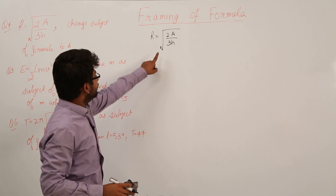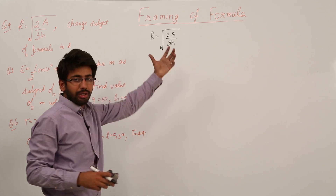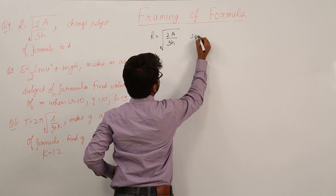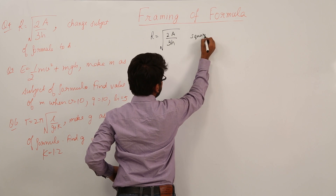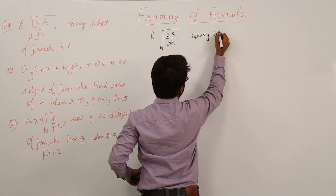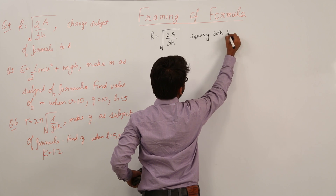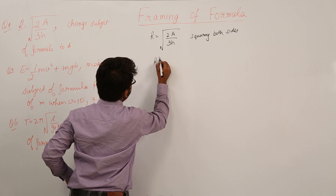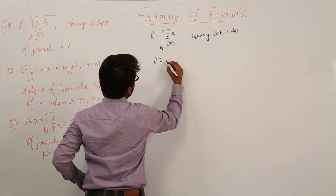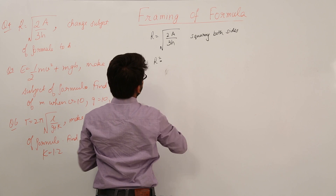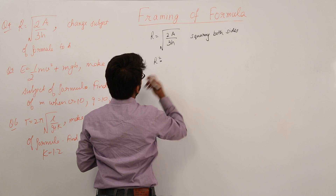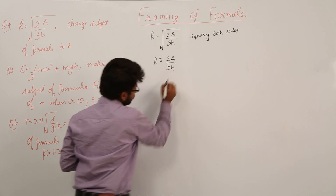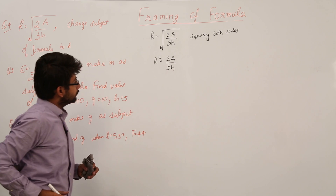Since we have a square root, we should square both sides. Squaring both sides, we get r squared is equal to 2a divided by 3h, as the square root gets cancelled out.